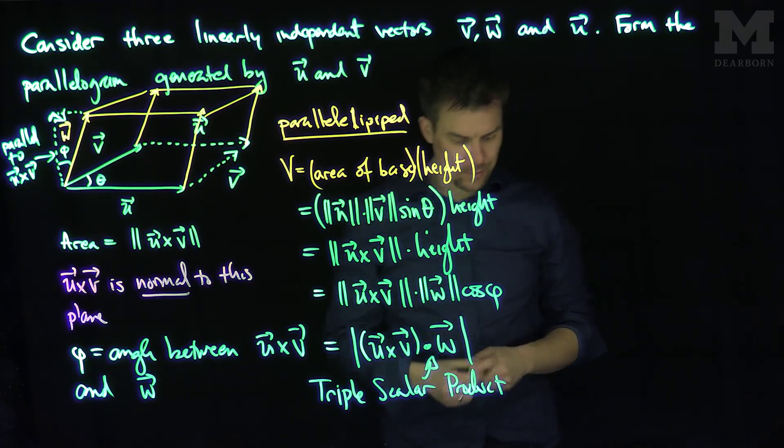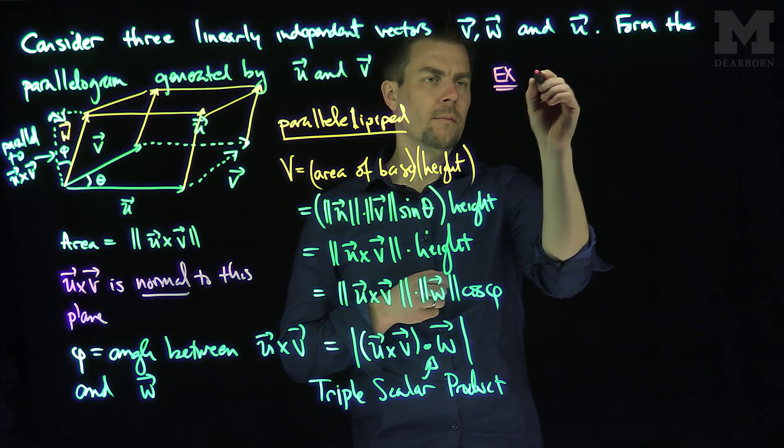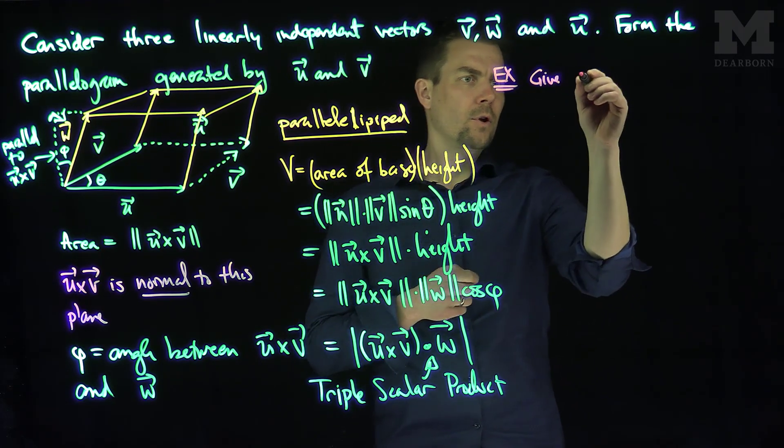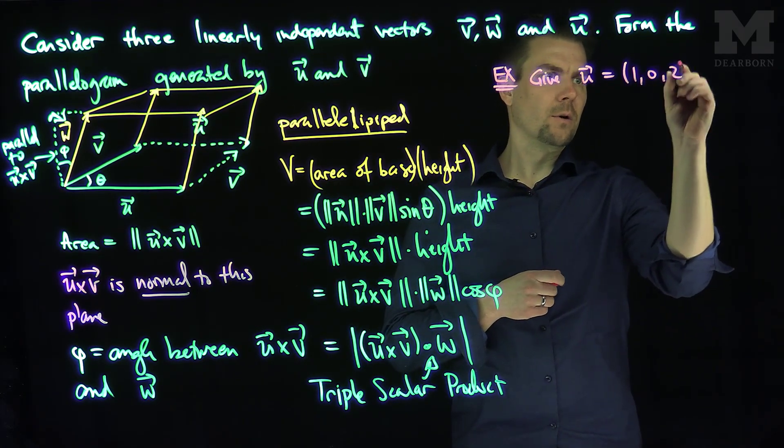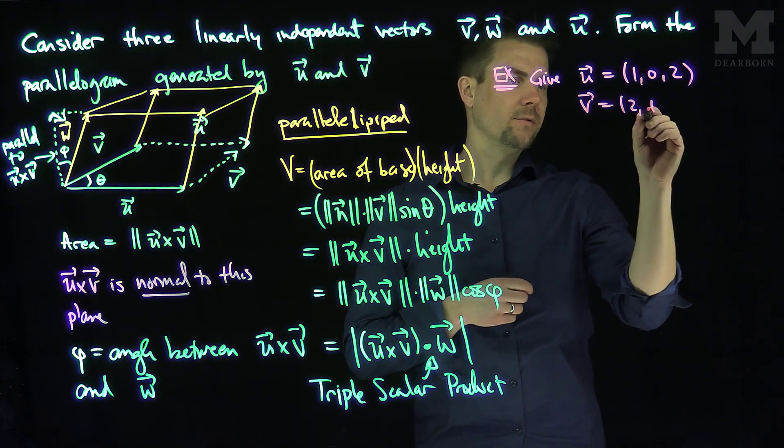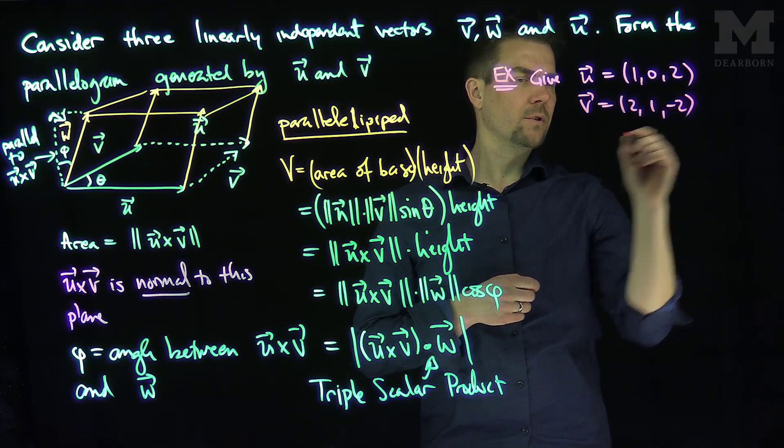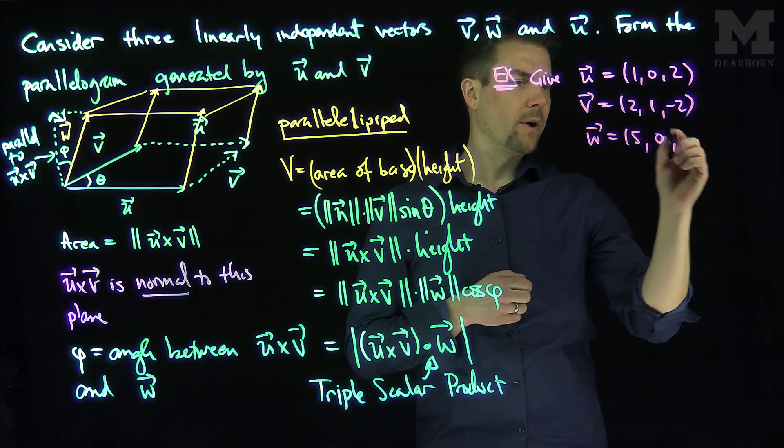Okay, let's see an example of how we would use this. So, if we're given u, let's say that u is 1, 0, 2. Let's say that v will be 2, 1, negative 2. And let's say that w is 5, 0, and 1.